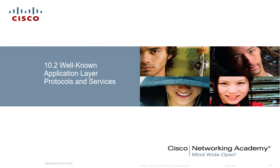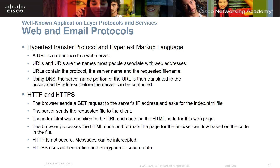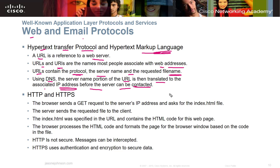Well-known application layer protocols include web and email protocols. Hypertext Transfer Protocol (HTTP) works with HTML to deliver web pages. A URL is a reference to a web server — URLs contain the protocol, the server name, and the requested file name. Using DNS, the server name portion of the URL is translated to the associated IP address before the server can be contacted.